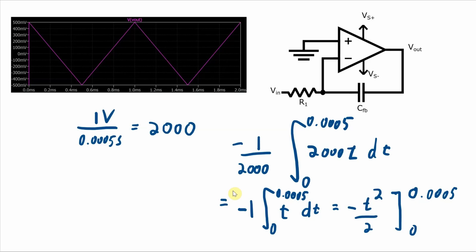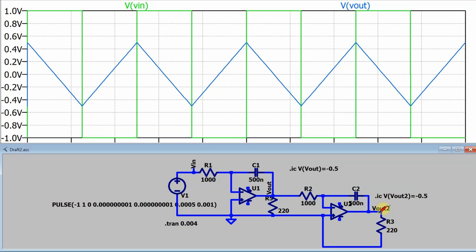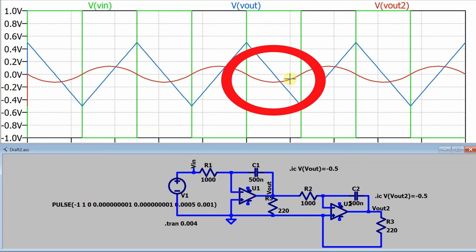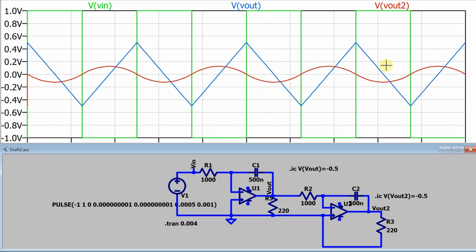So integrating a triangle wave gives a quadratic function — a negative quadratic on the rising slope and a positive quadratic on the falling slope, back to back. The result looks almost like a sine wave, but it's actually just two quadratic functions — one positive and one negative — repeating. When we simulate the two-stage integrator in LTSpice and look at V_out2, it kind of looks like a sine wave, but we know it's not actually sinusoidal — it's just quadratic, quadratic, quadratic.